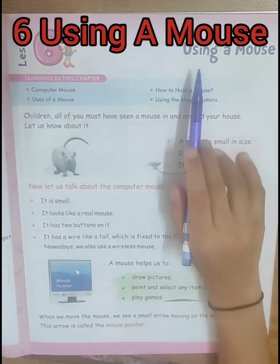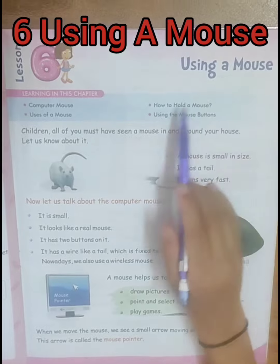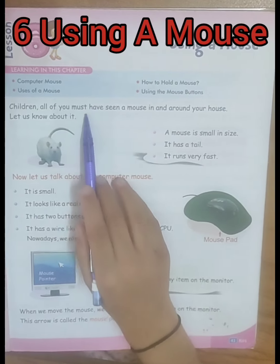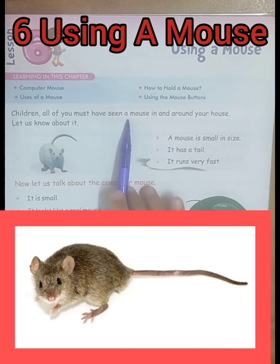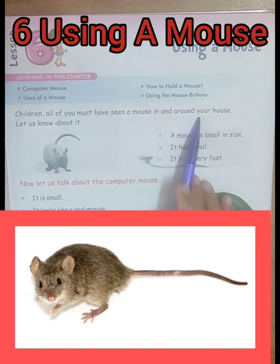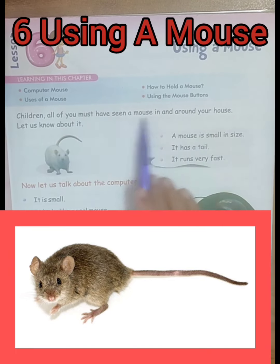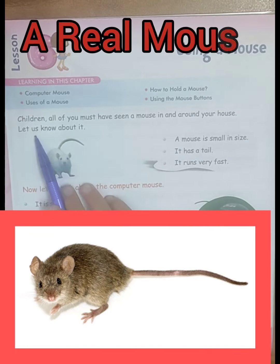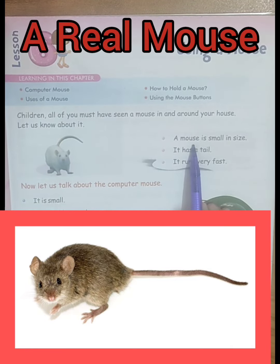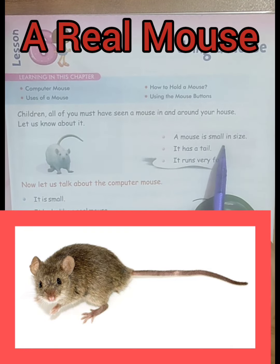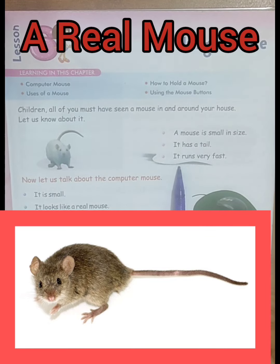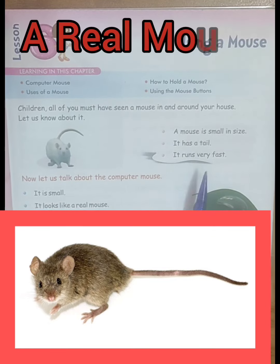Lesson No. 6: Use a Mouse. Children, all of you must have seen a mouse in and around your house. Let us know about it. A mouse is small in size. It has a tail. It runs very fast.